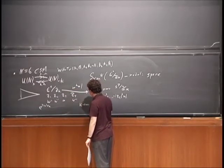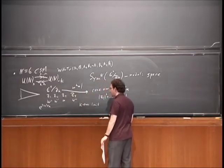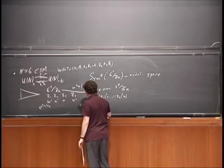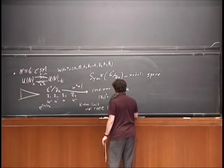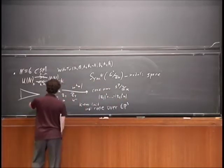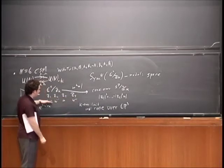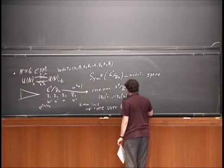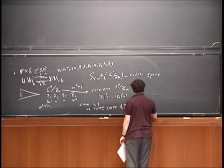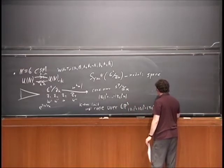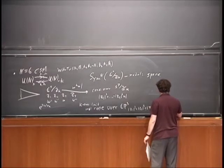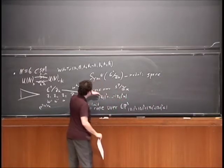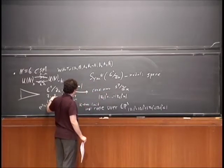The k equals infinity limit gives a seven-dimensional geometry — the real cone over CP^3. CP^3 is the three-dimensional projective space, defined by modding out C^4 by that U(1) and imposing the constraint |z1|^2 + |z3|^2 - |z2|^2 - |z4|^2 = 1. So C^4/Z_k approaches the real cone over CP^3 in this limit.